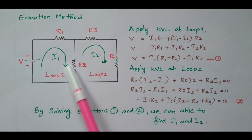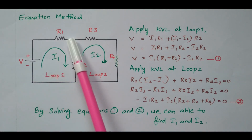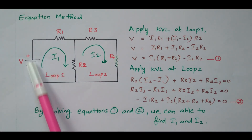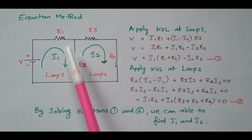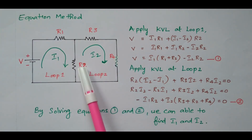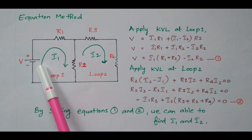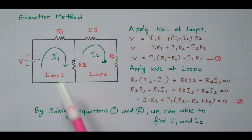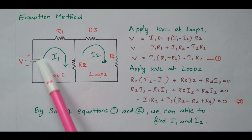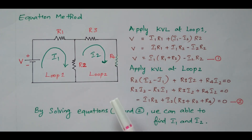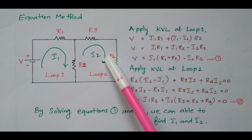The supply voltage is available and four resistors are connected. Loop 1 is the closed loop containing the voltage source, R1 and R2. Loop 2 contains R2, R3 and R4. The current direction — we can take any direction, but it is better to take a uniform direction. Both loop 1 and loop 2 have current flowing in the clockwise direction.